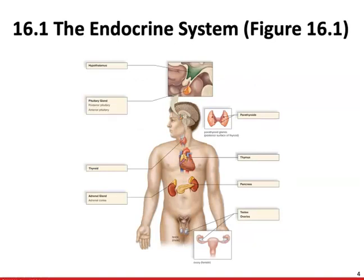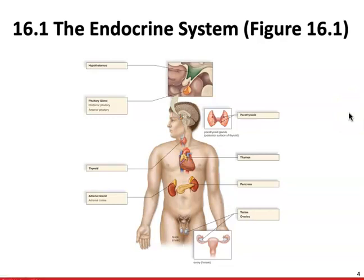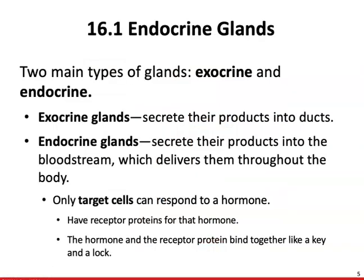Here is an overview of some of the different organs we're going to be talking about in the endocrine system. Spend a little bit of time at the end of this chapter reviewing this diagram — it's a fantastic study tool to help you make sure you've understood all the different organs involved. There are two main types of glands: exocrine and endocrine. Exocrine glands secrete their products into ducts; endocrine glands secrete their products into the bloodstream. Only target cells respond to a given hormone, and they have specific receptor proteins for it.